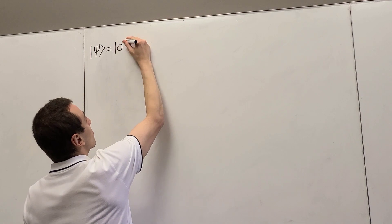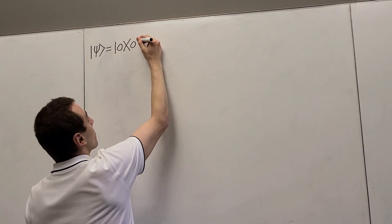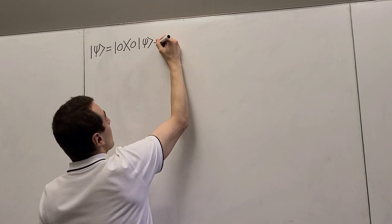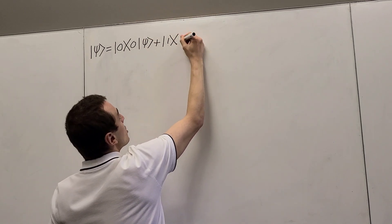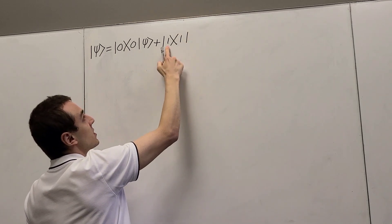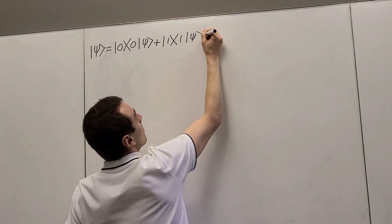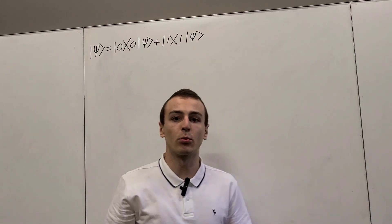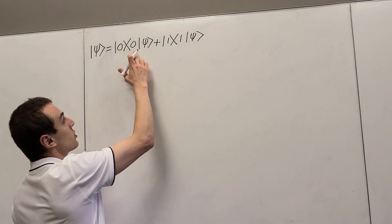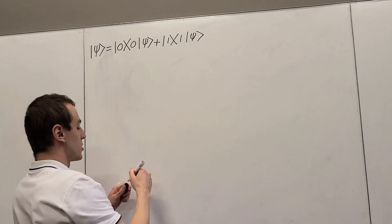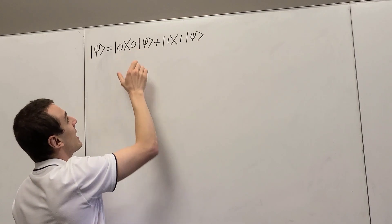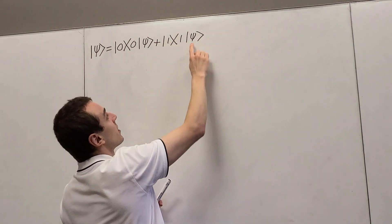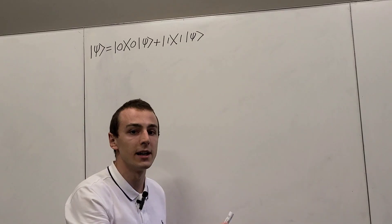We're going to have a ket-bra combination of the state denoted by zero — that's going to act on Psi — and we're also going to have a ket-bra combination of the state denoted by one, and that's going to act on Psi. The ket-bra is a projector and it projects onto a subspace. This projector projects onto the subspace spanned by the zero state, and this projector projects onto the subspace spanned by the one state.